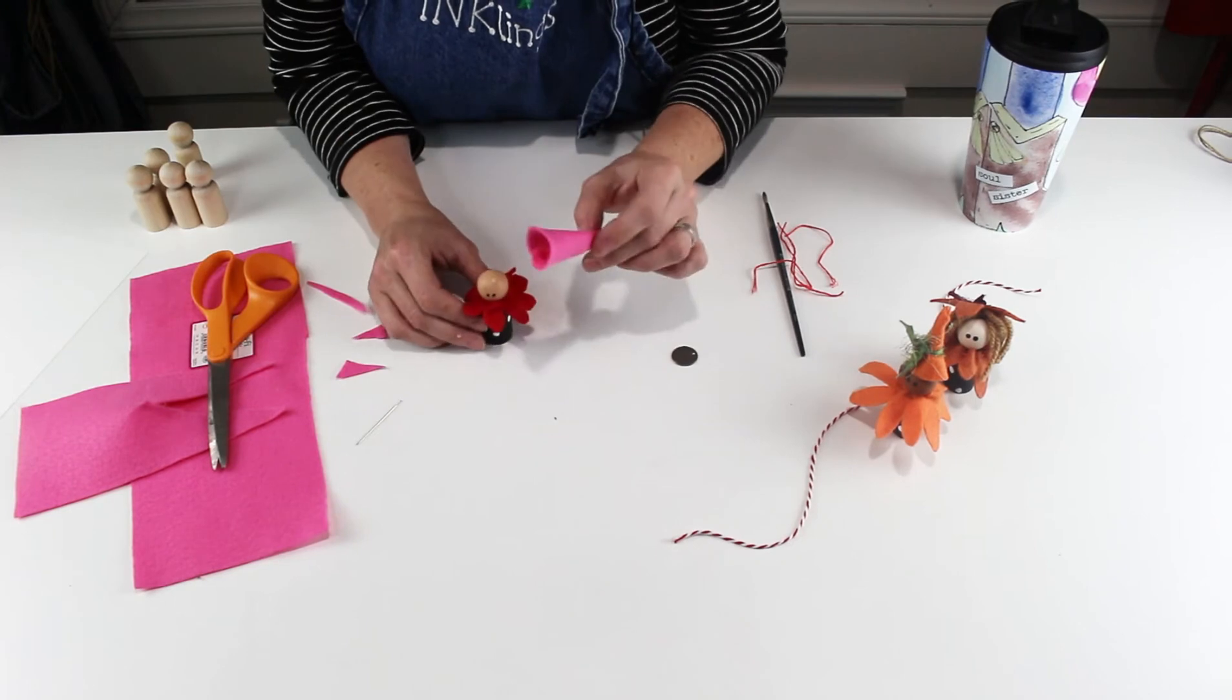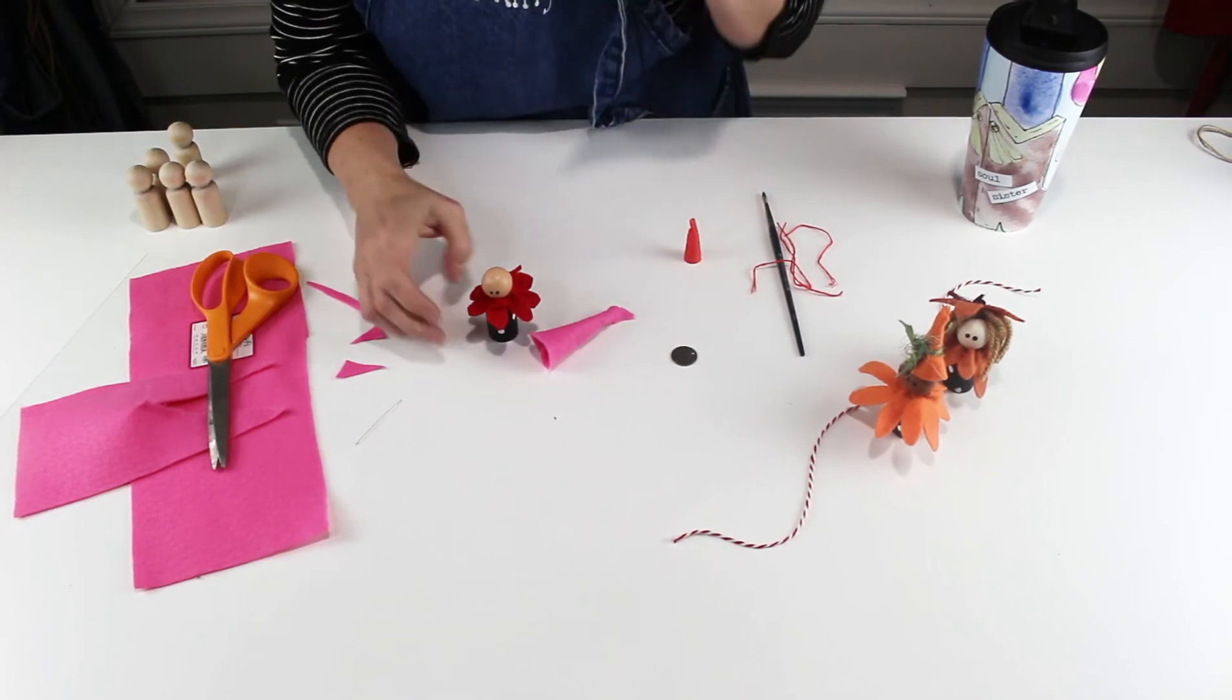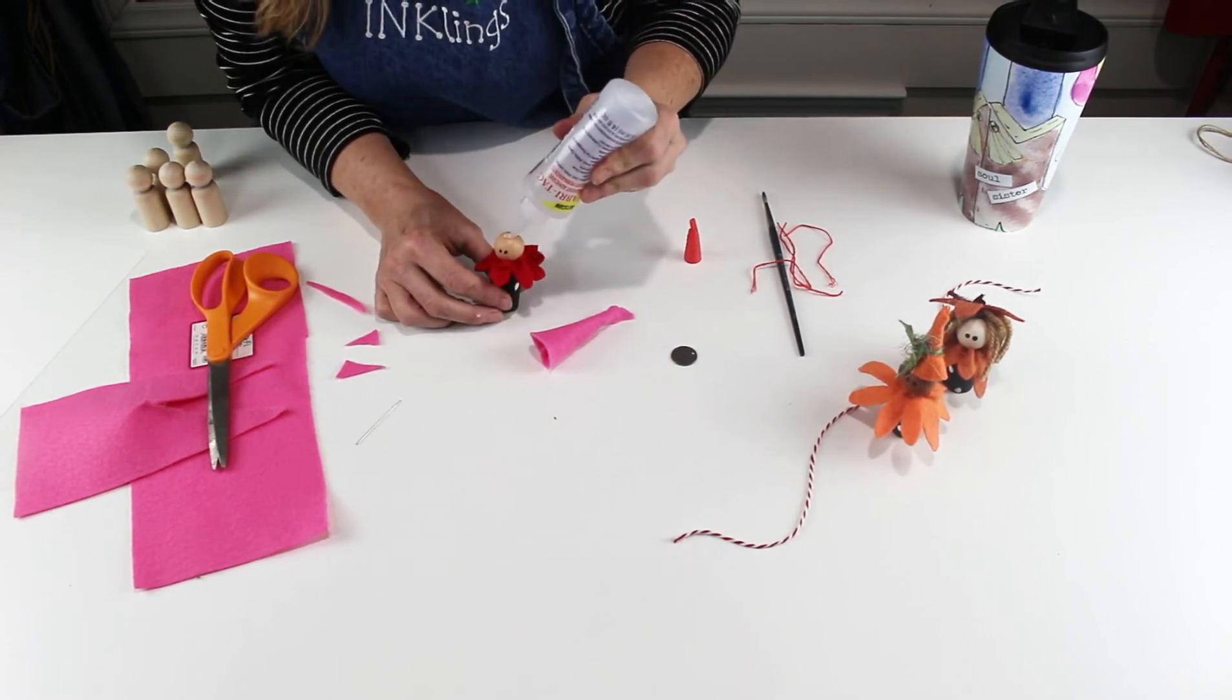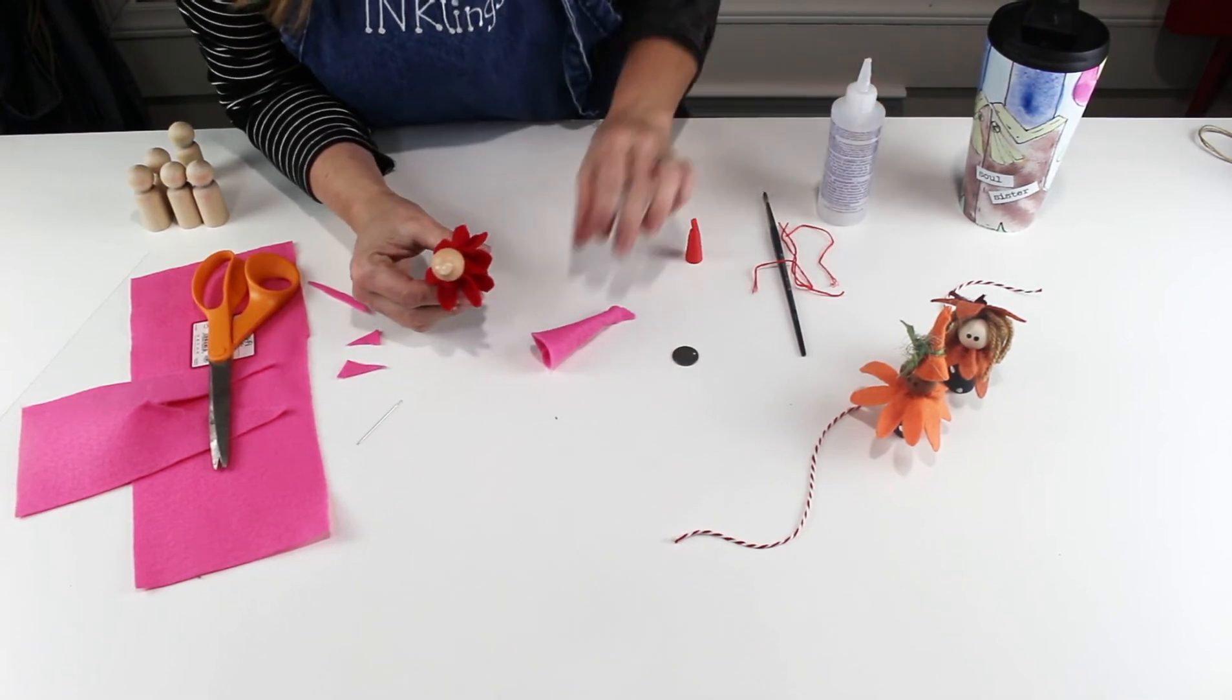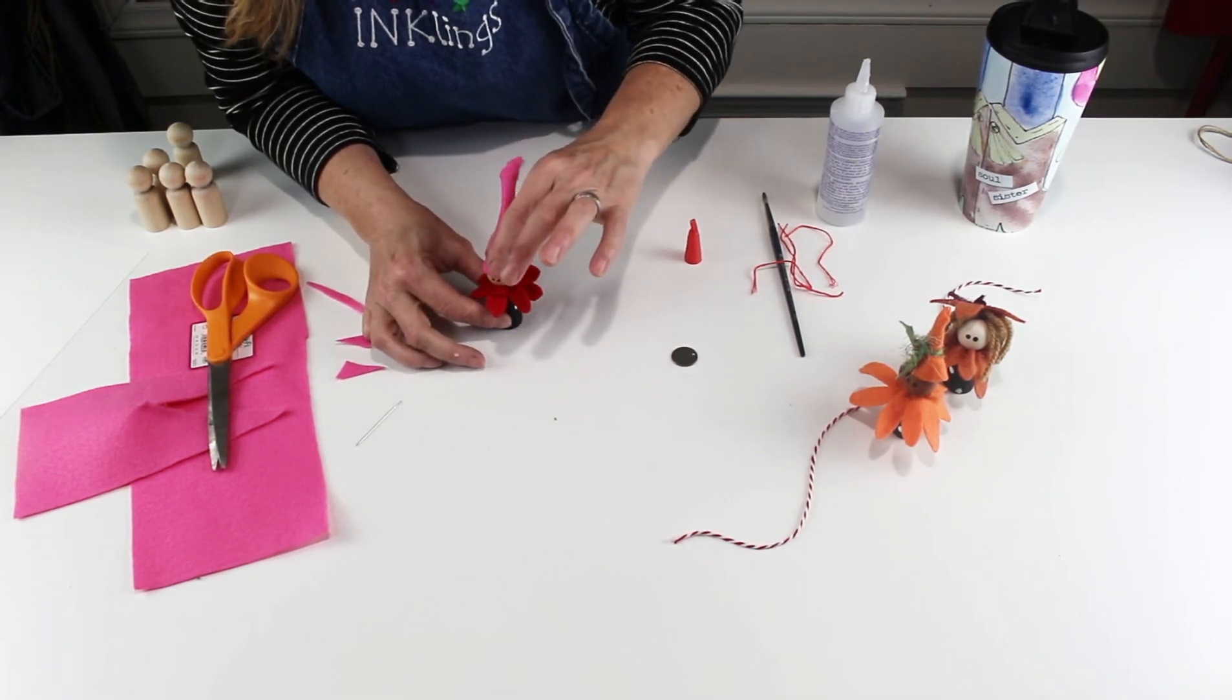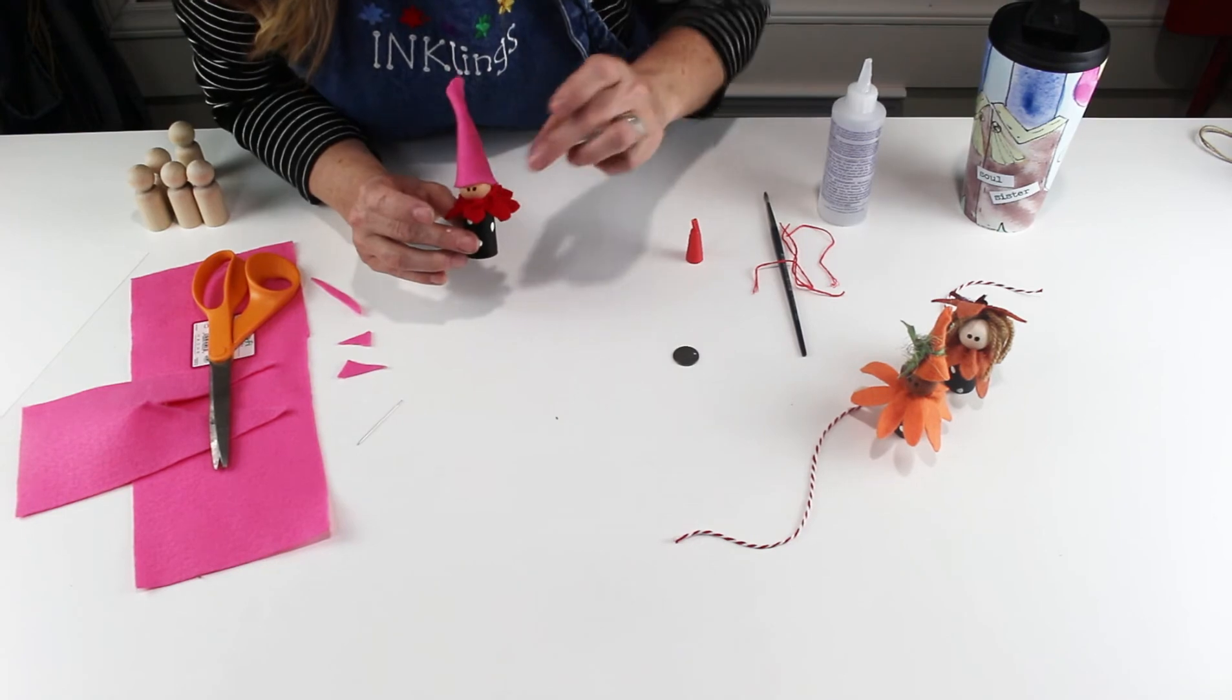Now we want to get the hat to the top of his head. I'm going to use some Fabric-Tac because this works awesome with felt and wood and will really hold this well. I'm going to get some Fabric-Tac. This is made by Beacon Adhesives and it is awesome. I love this glue. I'm going to put a big glob of it on the top of his head just like that, and then I'm going to get my hat to touch it and hold it on. This glue dries really fast, so I'm going to give it just a second. Make sure there's not glue on his face, and then we're going to put the final touches on him.